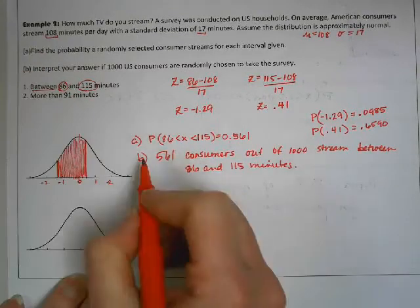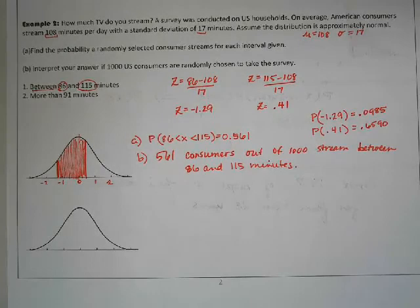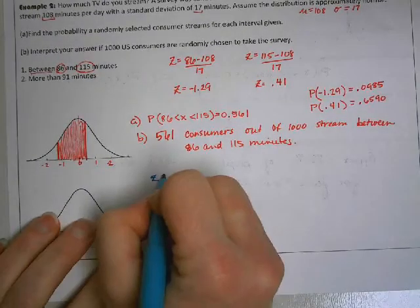It's number one A and B, then number two A and B. So I'm doing part B for number one. All right, now number two. Have to find a Z score.